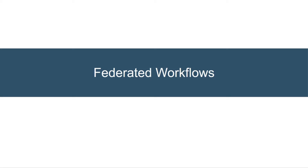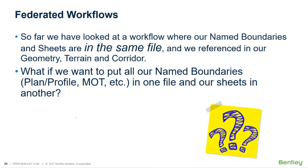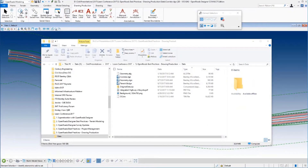The last thing I want to look at with plan and profile is federated workflows. So far we looked at a workflow where our name boundaries and our sheets are in the same file — we started in a blank file, referenced in our geometry, terrain, and corridor, and put all the name boundaries and sheets in the same file. But what if I wanted to break them up? What if I wanted to put all name boundaries in one file — plan and profile, maintenance of traffic — and all sheets in a separate file? Absolutely you can, and I want to show you how to do that.